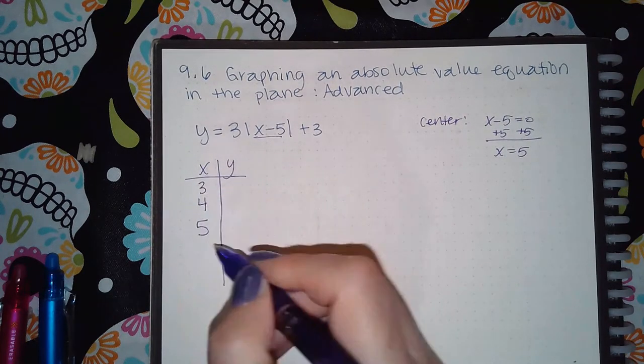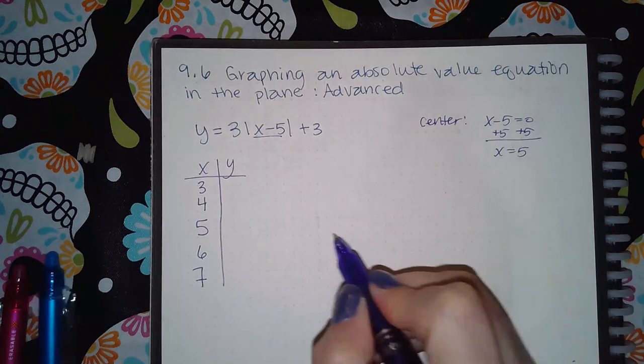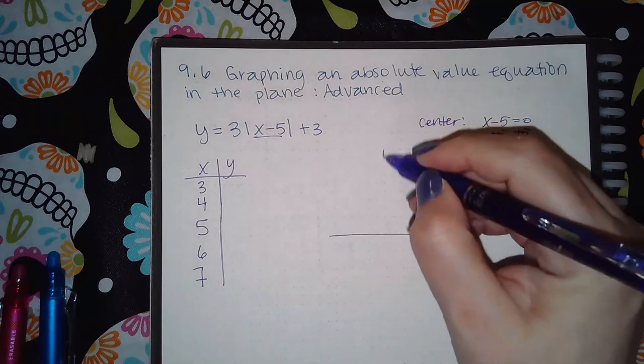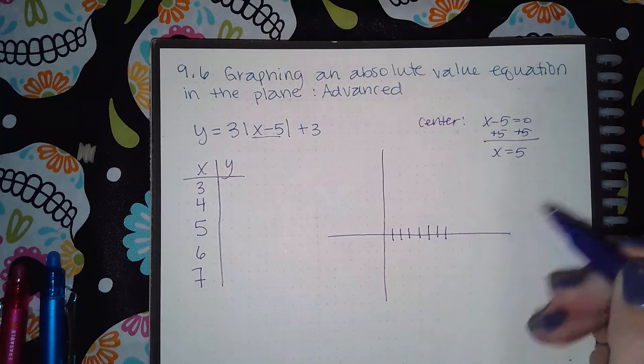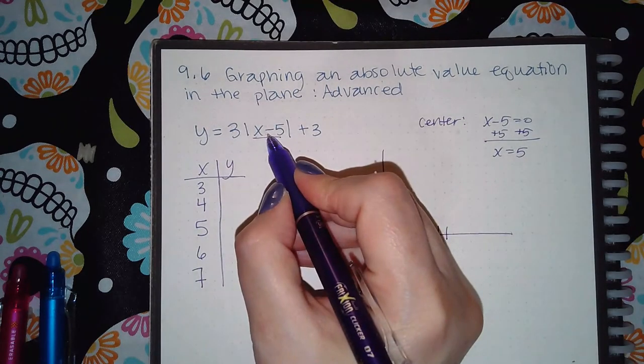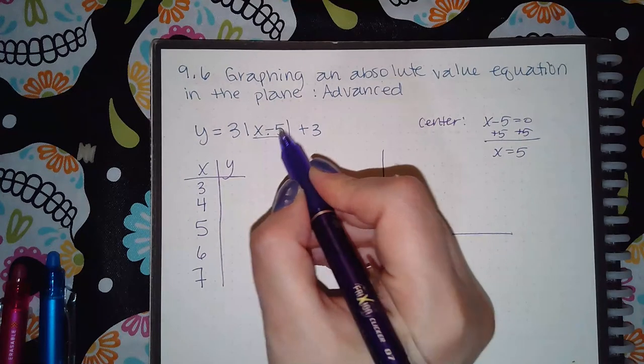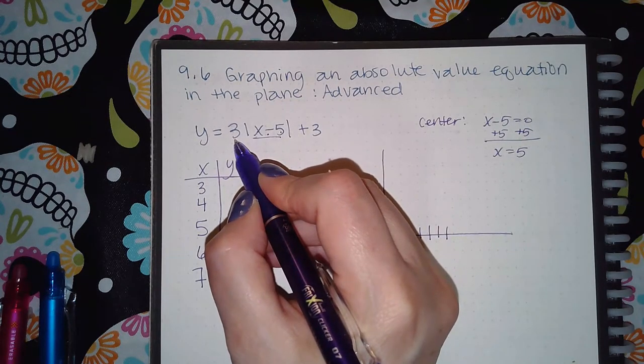to the left of five on a number line and two values to the right. When I do that, I get 1, 2, 3, 4, 5, 6, 7. So for three, I get negative two, which turns positive. Two times six is...